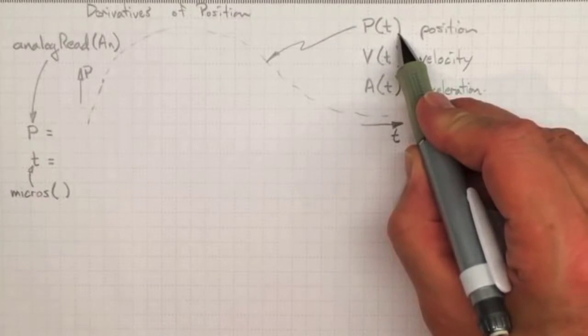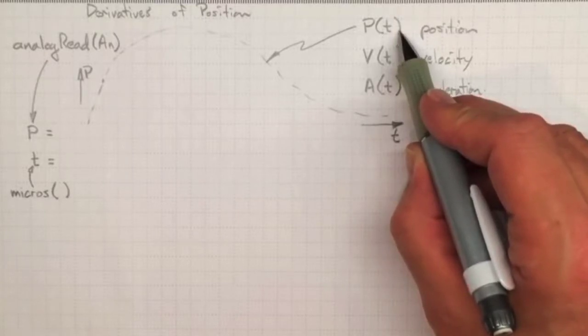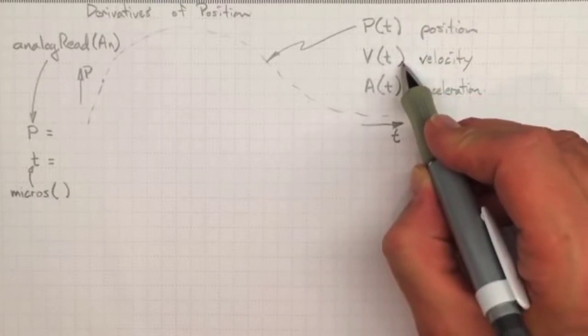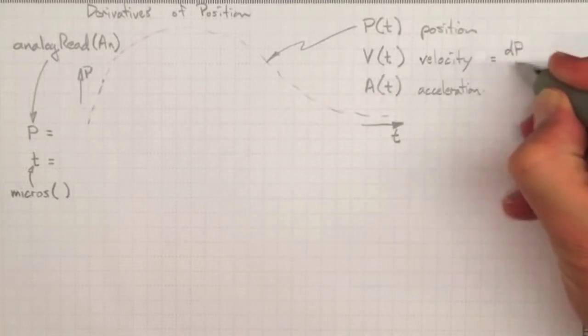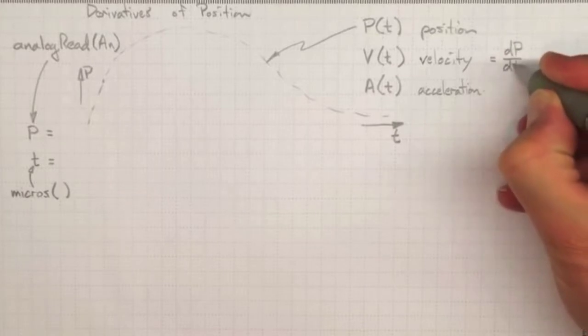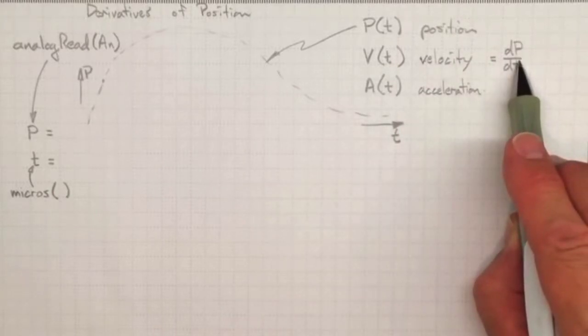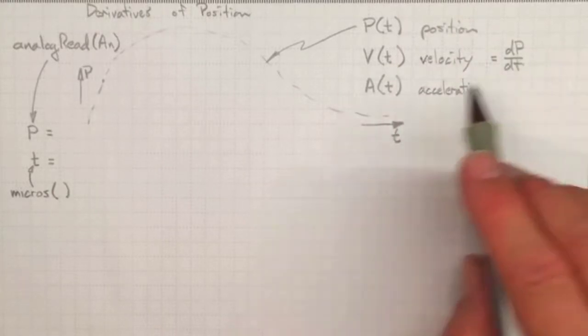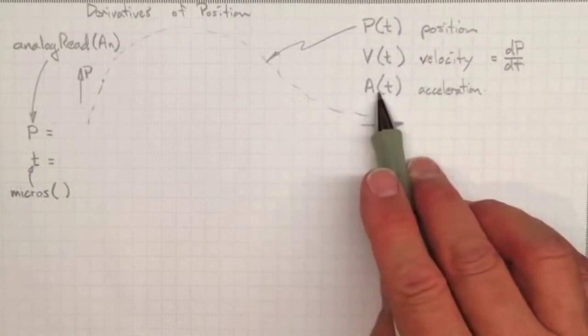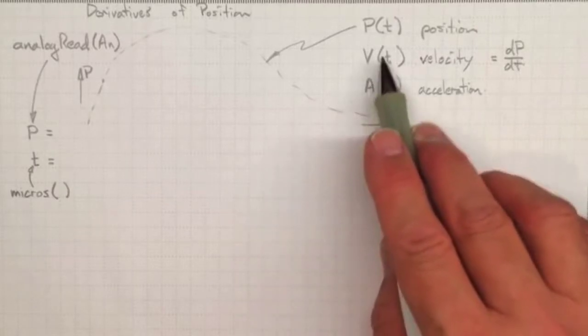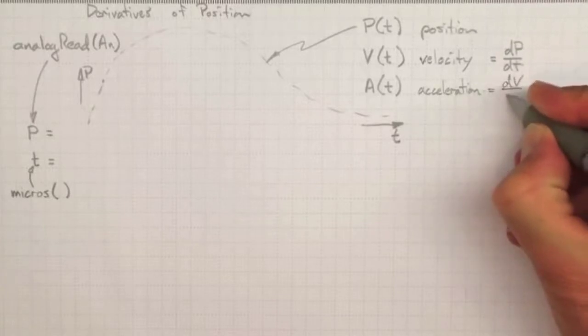If we knew what it was, we could use analytical calculus to find out what the velocity was, because the velocity is just the derivative of position with time. If we knew what that function was and we were good at calculus, we could just do a derivative and find out. Likewise, if we knew the velocity because we took the derivative of the position, we could find the acceleration by taking the derivative of the velocity, derivative of velocity with time.